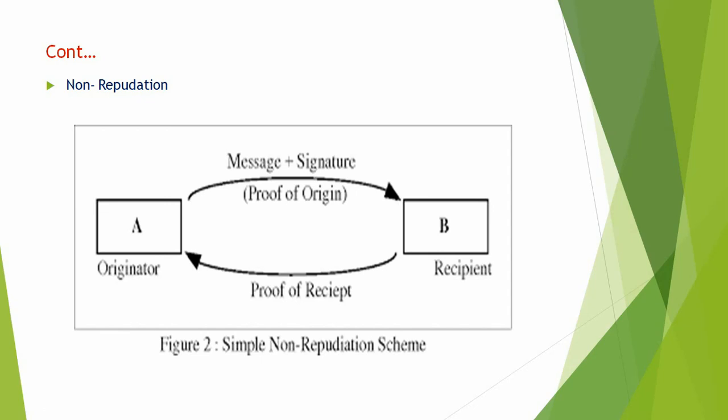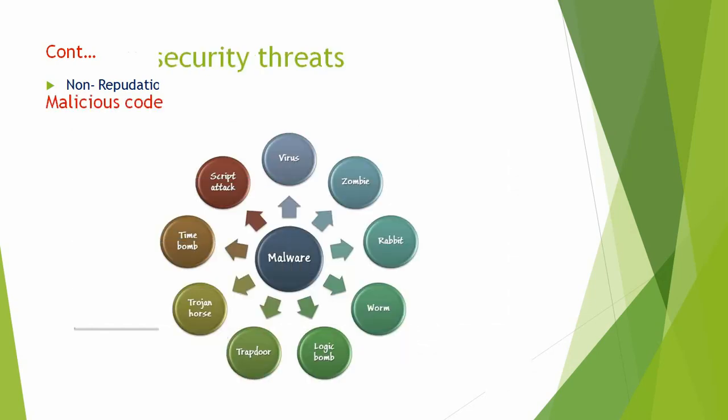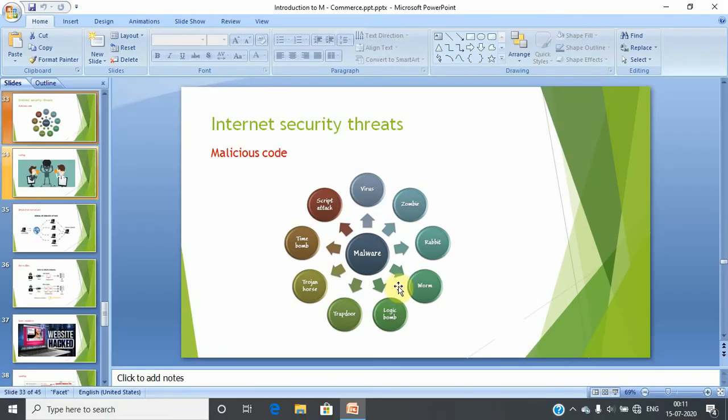So these are the four security aspects: confidentiality, integrity, authorization, and non-repudiation. These allow e-commerce and m-commerce to be used safely. Next, we will see internet security threats. Thank you.